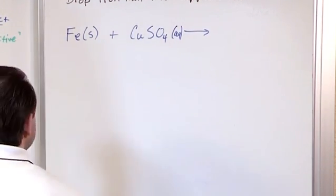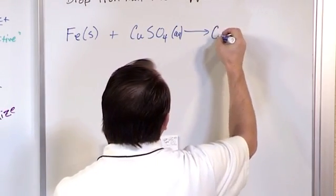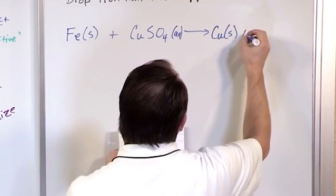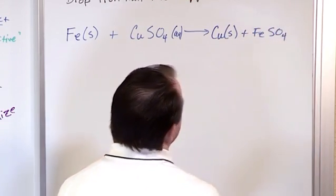So because of that, what's going to end up happening is on the right-hand side, this copper is going to be bumped out and form copper metal and then you're going to have FeSO4. That's what's going to happen.